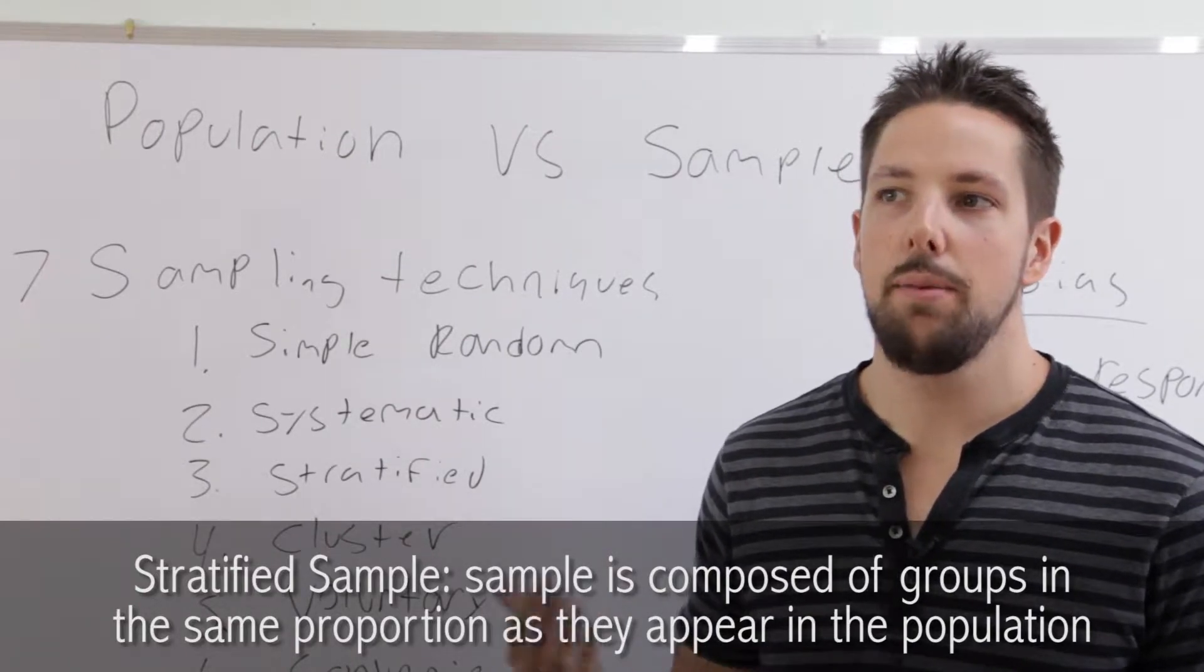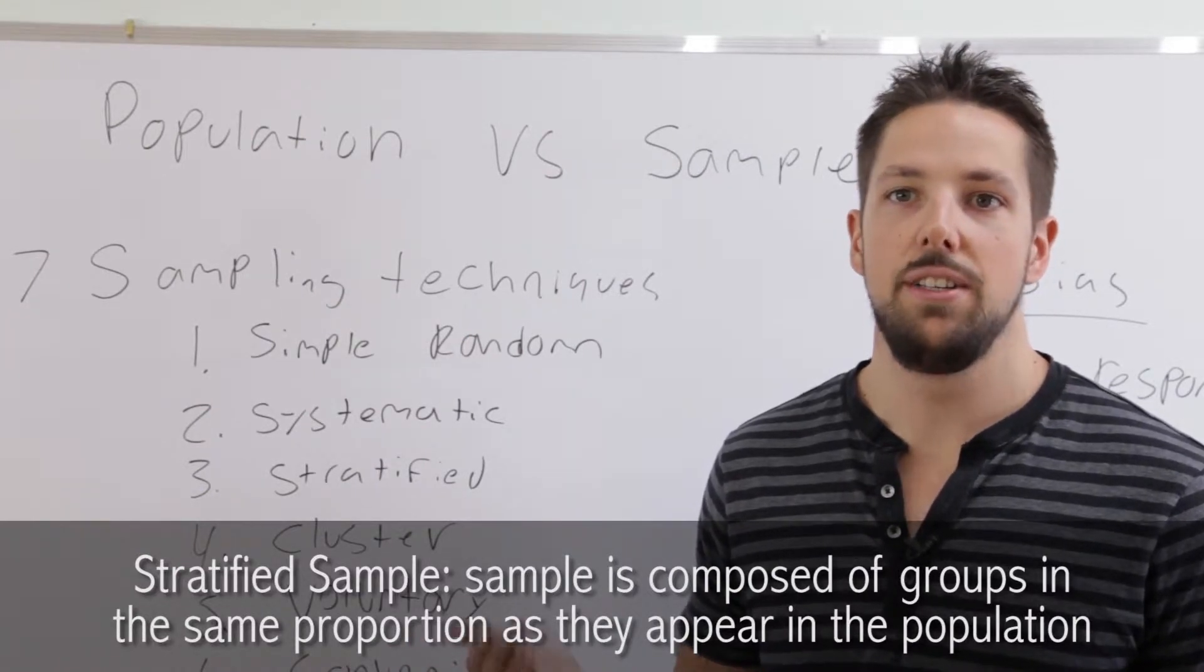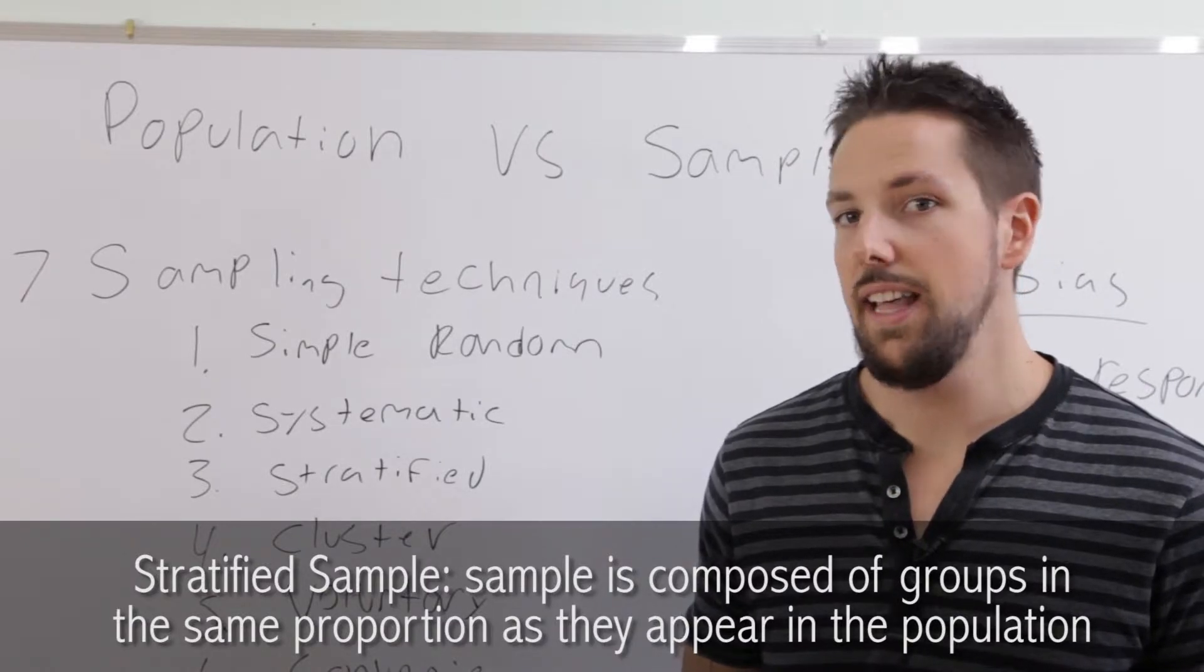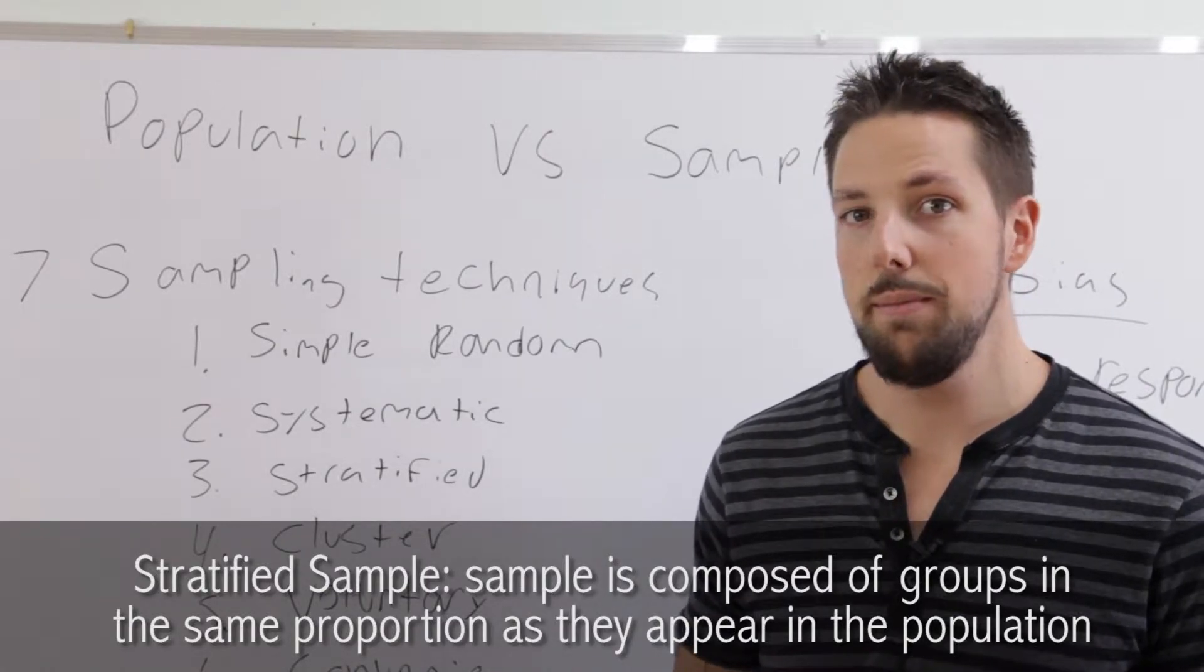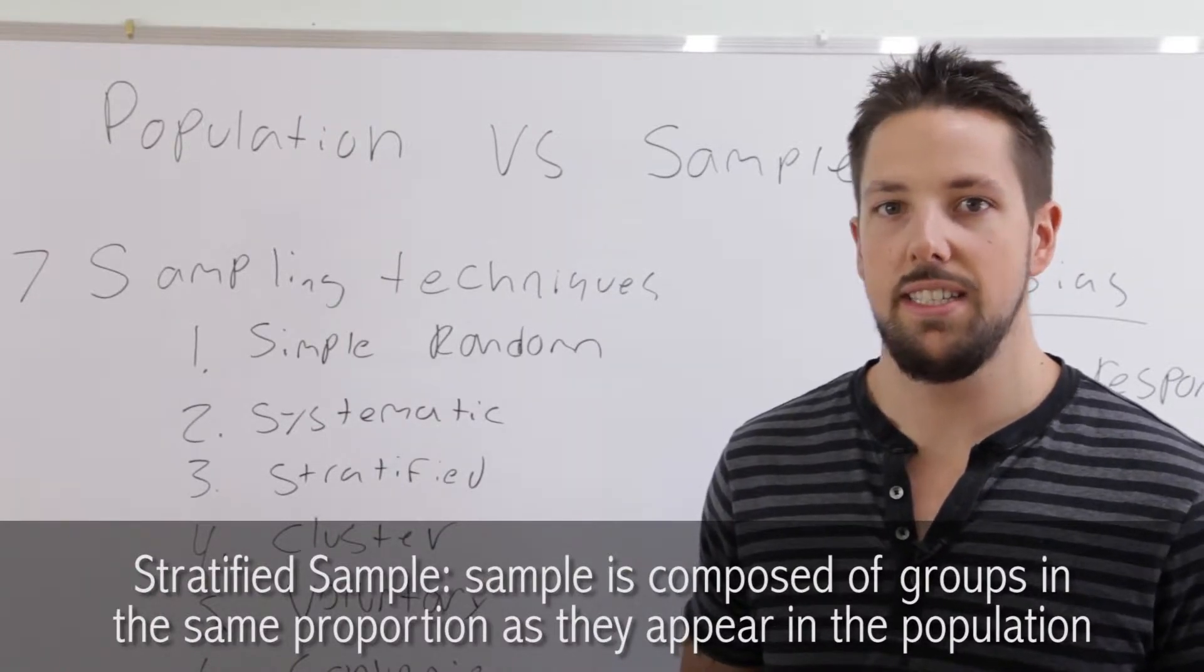What that means is say the population of Canada is 35% women and 65% men, and you're doing a sample of 100. That means you need 35 women and 65 men. So you have the same exact proportions and the same groups.